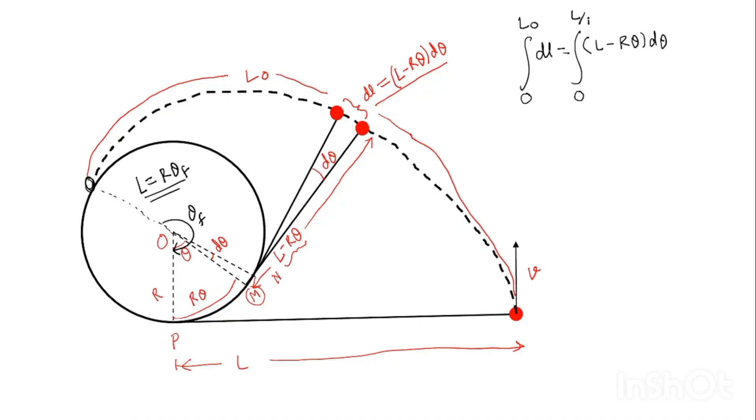So, if you integrate with these limits, then very easily you get L₀ equal to (L minus Rθ)² upon minus 2R with limits of θ being 0 to L upon R. This will give you L₀ equal to nothing but L² upon 2R. Very important equation we got. The path length of the trajectory is related to the length and radius like this.